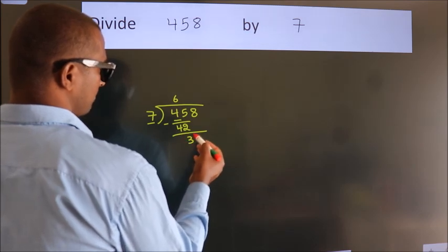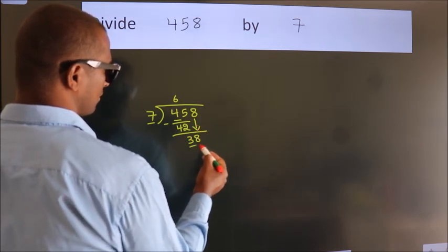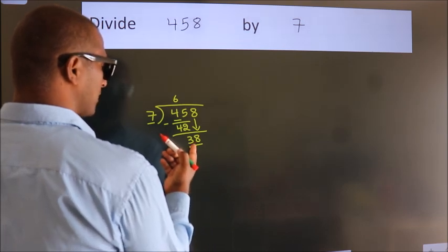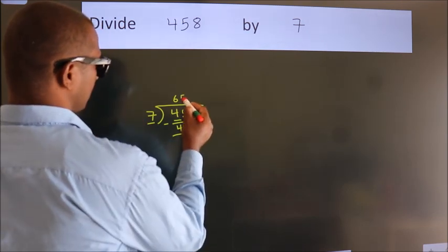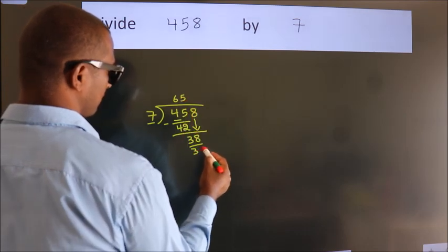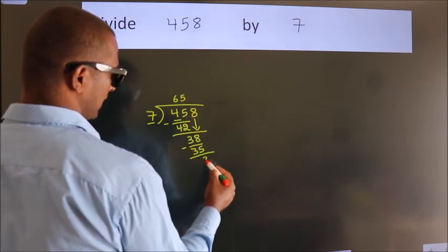After this, bring down the beside number. So, 8 down. So, 38. A number close to 38 in the 7 table is 7×5=35. Now we subtract. We get 3.